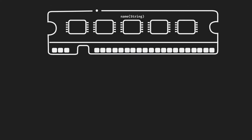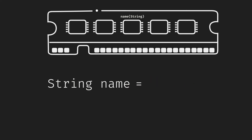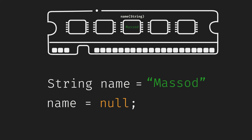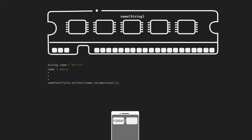Once upon a time, there was a language called Java, in which they could define a variable of type string. They could leave it uninitialized, assign string values, or even assign a null value, which wipes the value off a variable. Now, these could be some lines inside an Android application, where at some point, name was supposed to be shown to the user via a text field.